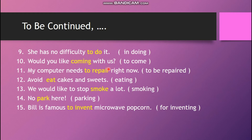To be continued — number ten: 'Would you like coming with us?' — 'coming' is incorrect; after 'would like,' it should be 'to come.' Number twelve: 'Avoid eat cakes and sweets' — it should be 'eating' after the verb 'avoid.'